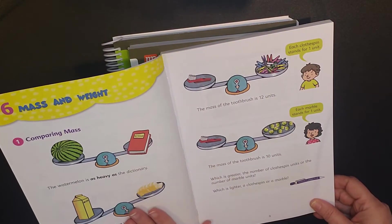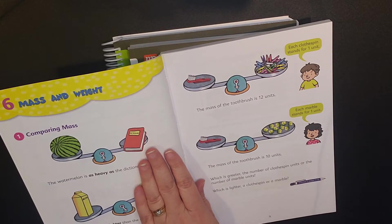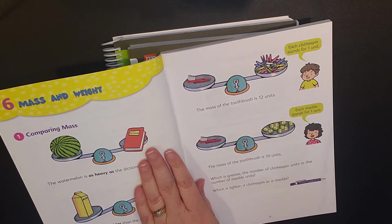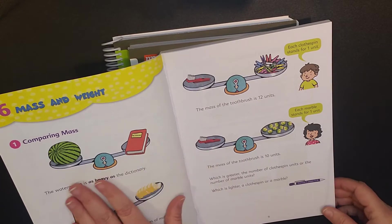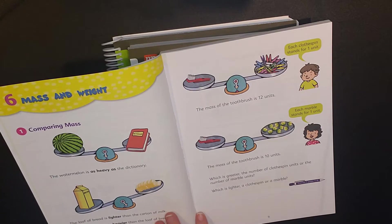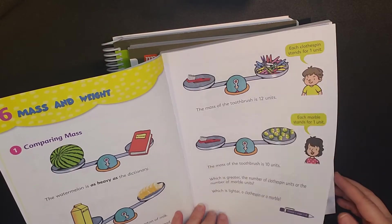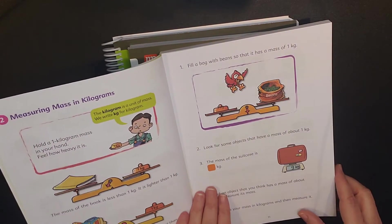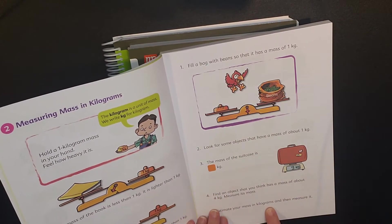If you'll notice at the end of each lesson, there is a review, which I will highlight here in just a few seconds. Each lesson opens up with talking about a real world, how does this impact. So for example, this is the watermelon is as heavy as the dictionary. So you're talking about two things that you're used to and how to compare that.